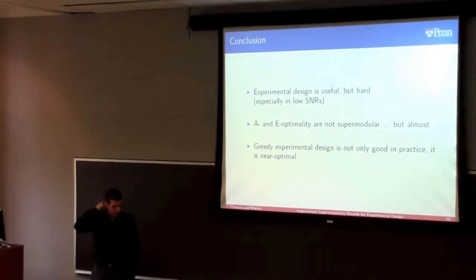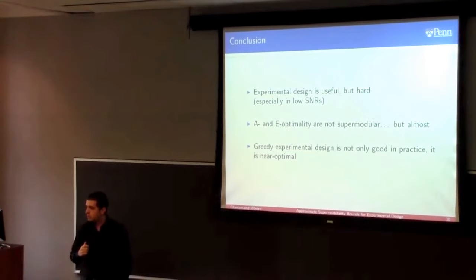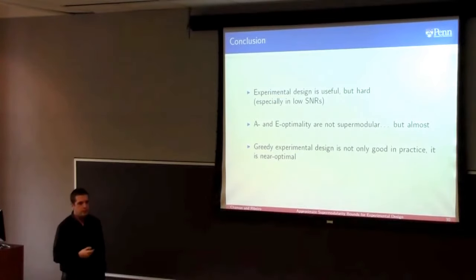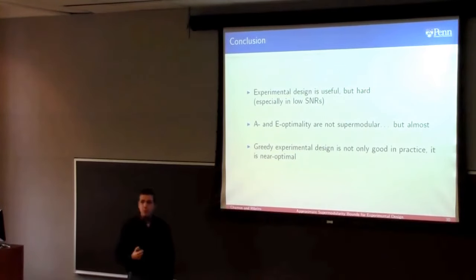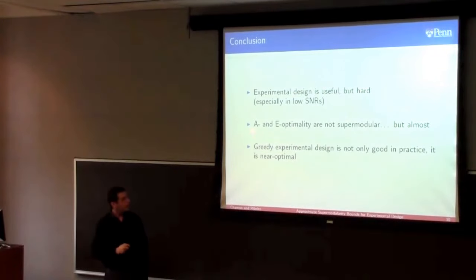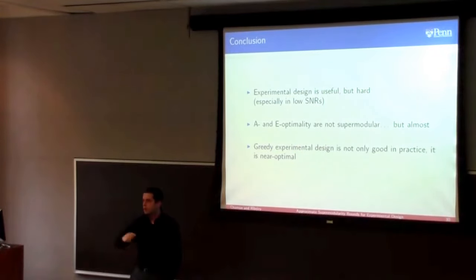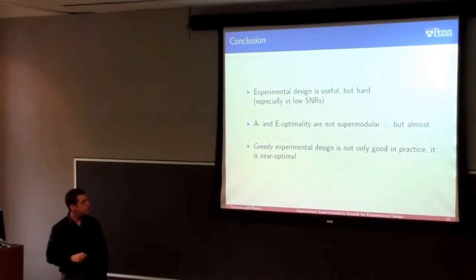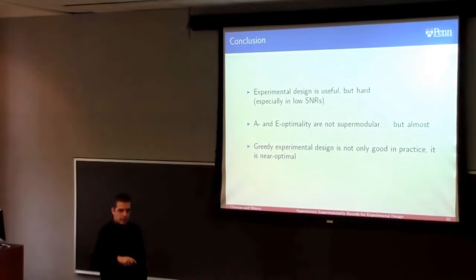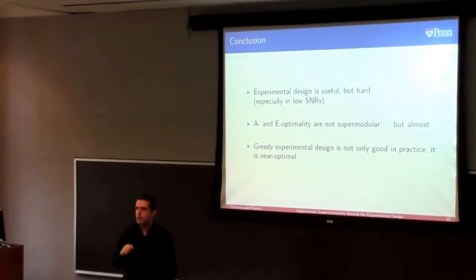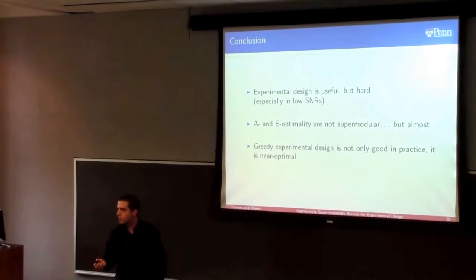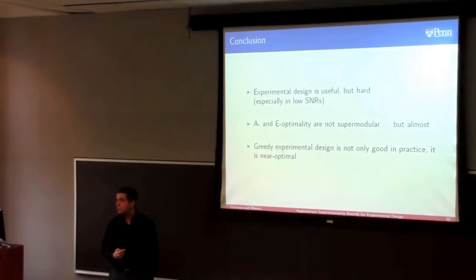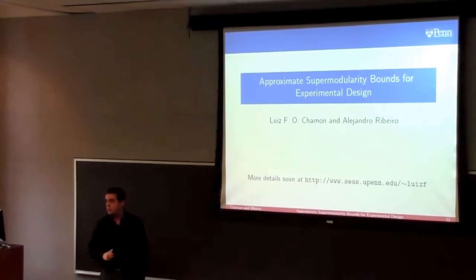To conclude: experimental design is useful but hard, especially in low SNRs, which is typical for data taken by opportunistic sampling. A-optimal and E-optimal criteria are not supermodular, which is what makes the problem hard — but they are almost supermodular, very close to it. That means we can use greedy experimental design to get near-optimal experimental designs, and greedy not only works well in practice but is also guaranteed to do pretty well.